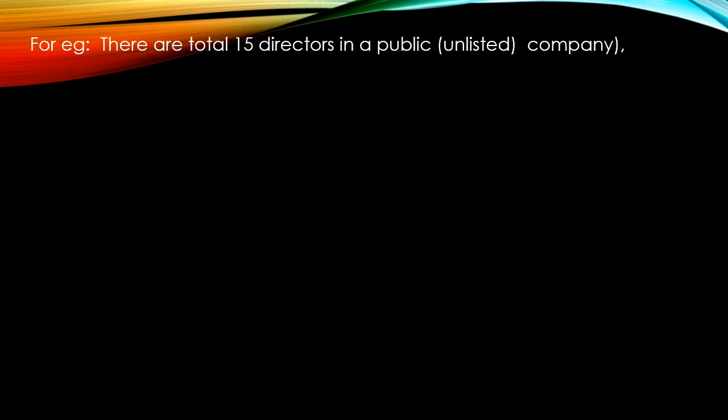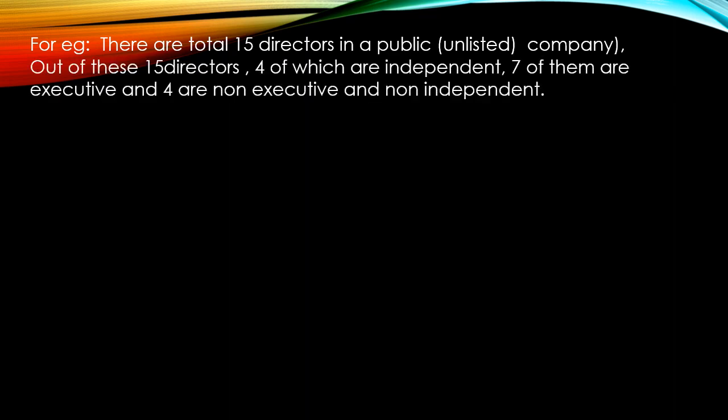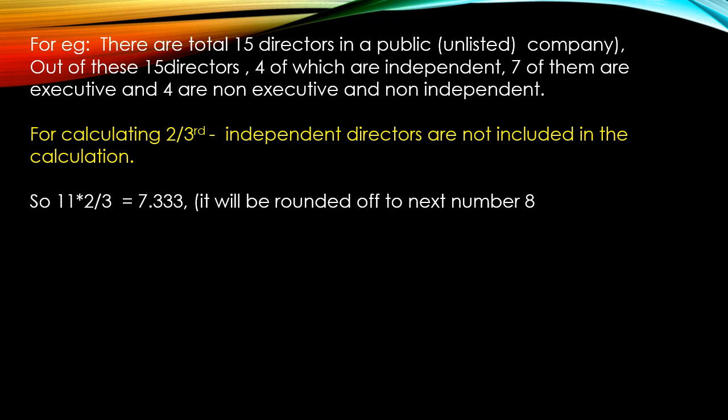For example, there are 15 directors in a public company. Out of these 15 directors, 4 are independent directors — and independent directors do not retire by rotation. So we have 15 minus 4 directors remaining, which gives us 11 remaining directors.